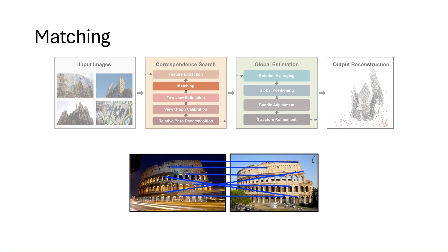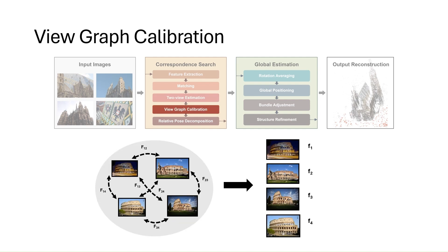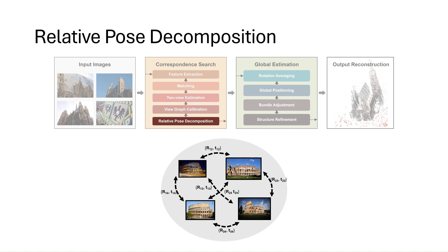Matches are established based on the extracted features. Next, we estimate two-view geometries, including the fundamental matrix, essential matrix, and homography for every pair, to filter out geometrically infeasible matches. When camera intrinsics are unavailable, we estimate focal lengths using the view graph of the decomposed fundamental matrices. Essential matrices are re-estimated with optimized focal lengths, and relative poses are decomposed from them. This concludes the correspondence search stage.